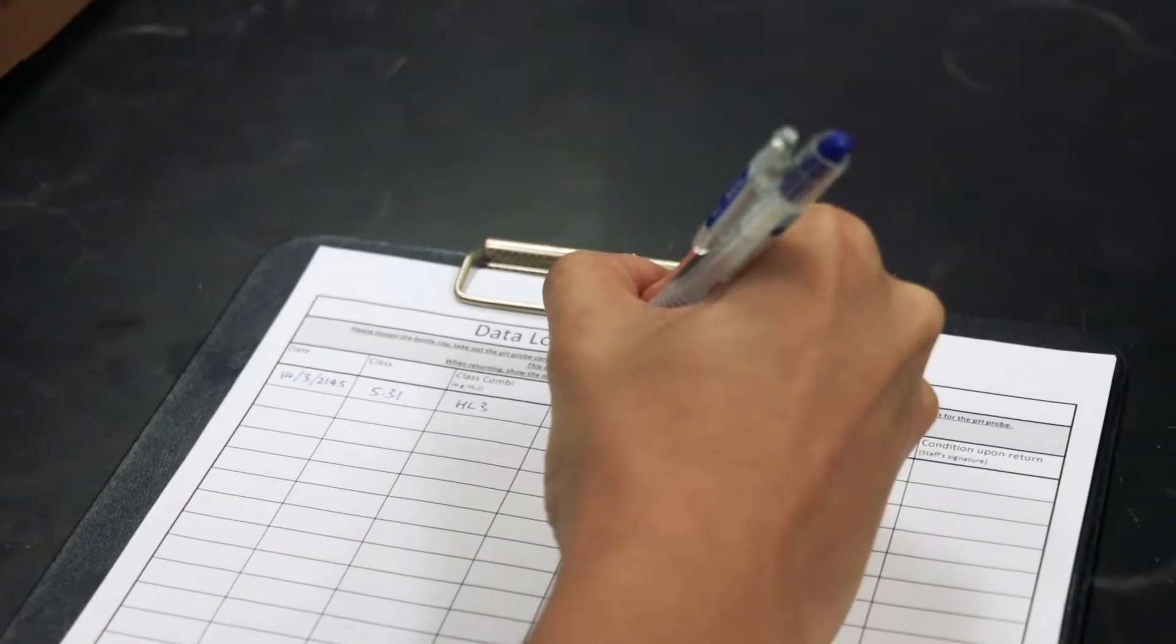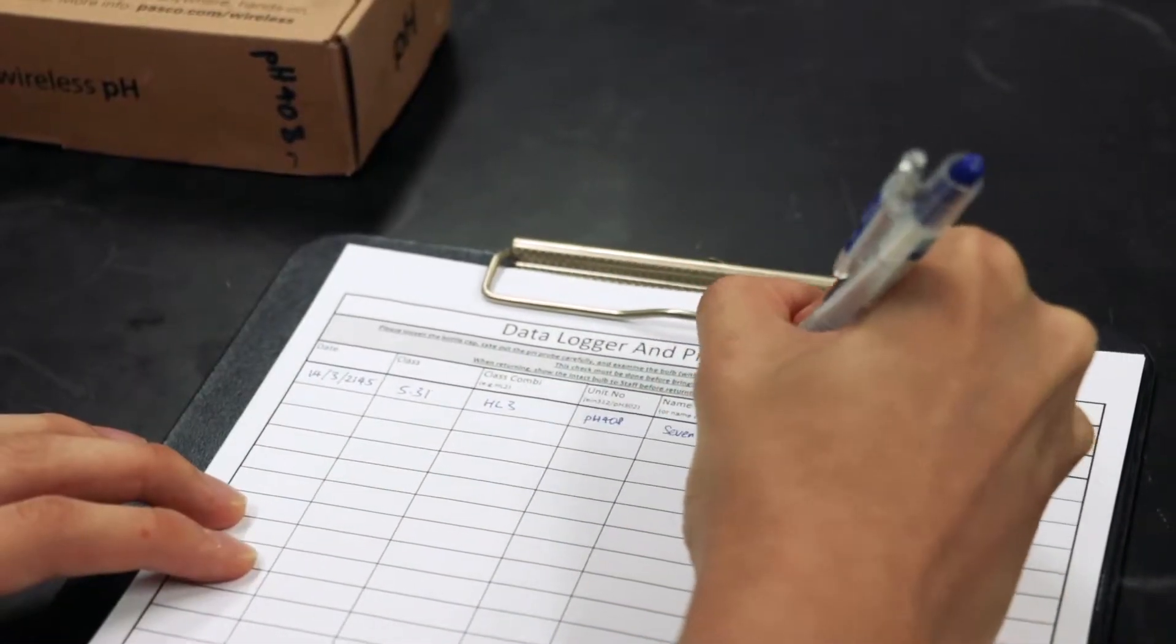Firstly, sign out the PH Probe by writing your name, class and the PH Probe CO number.